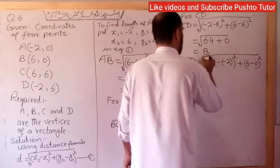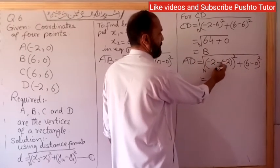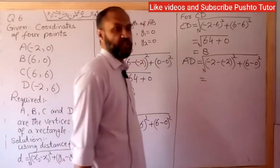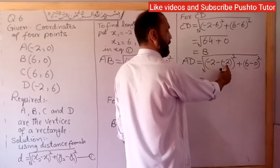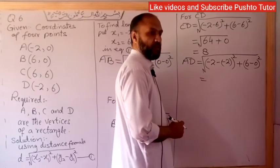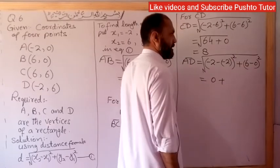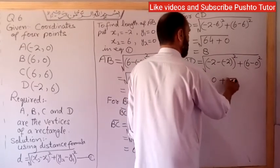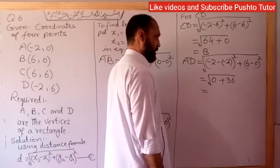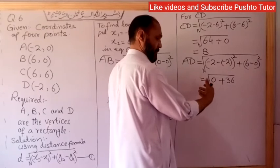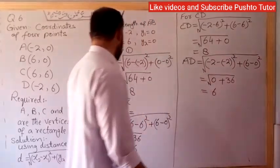Now finding AD. For A(-2,0) and D(-2,6): (-2 - (-2))² + (6 - 0)² = 0² + 6² = 0 + 36 = 36. Under square root of 36 gives AD = 6.